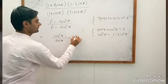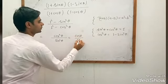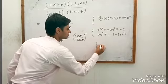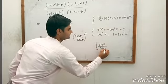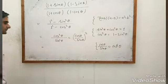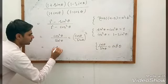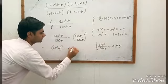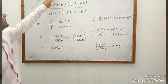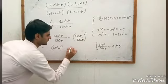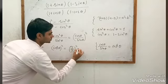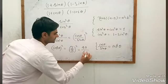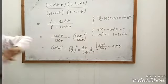So we have cos²θ upon sin²θ, which equals (cos θ / sin θ)². We know cos θ / sin θ = cot θ, so this is cot²θ. Putting cot θ = 7/8, we get (7/8)² = 49/64. That is the value of the given expression.